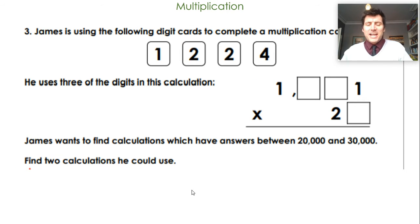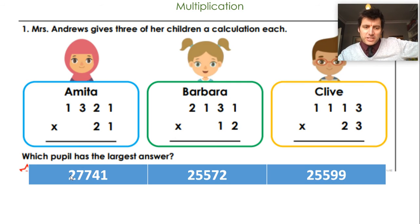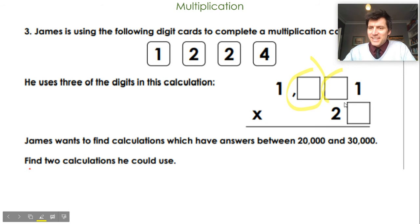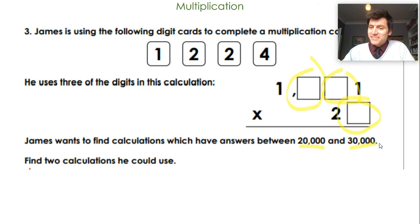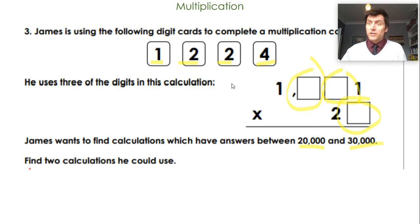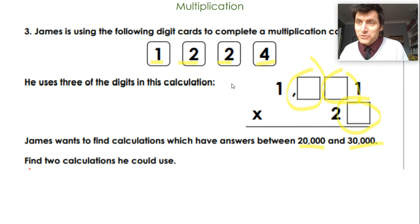Right, next one. James is using digit cards — individual digit cards — and he's trying to use some of them. He uses three of the digits in the calculation, so you can see there are three missing spaces. He wants to find calculations where the product is between twenty thousand and thirty thousand. Using the digits one, two, two and four — you can only use each digit card once, though two can appear more than once — complete the calculation where you have a four-digit number multiplied by a two-digit number, with ones and two already allocated. See how you get on.